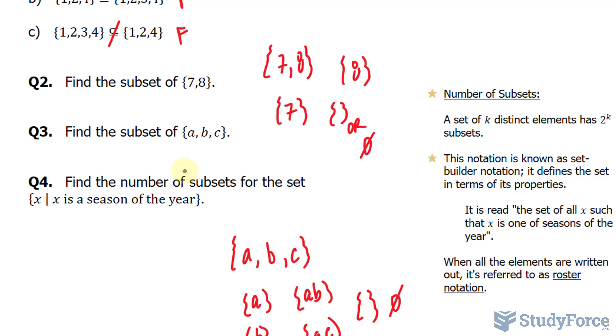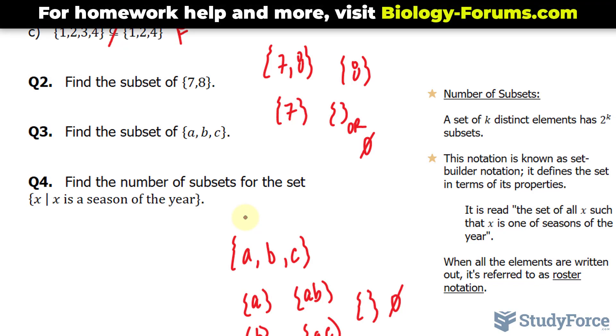In question number four, we're asked, find the number of subsets for the set. And notice that this time our set is written in a different type of notation. This notation here is called set builder notation, and it defines the set in terms of its properties.